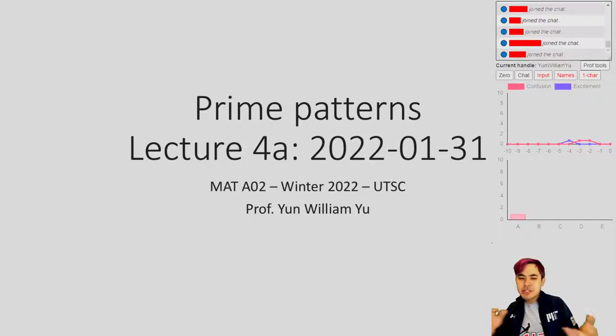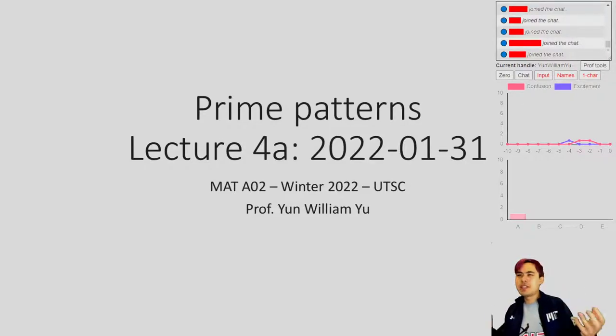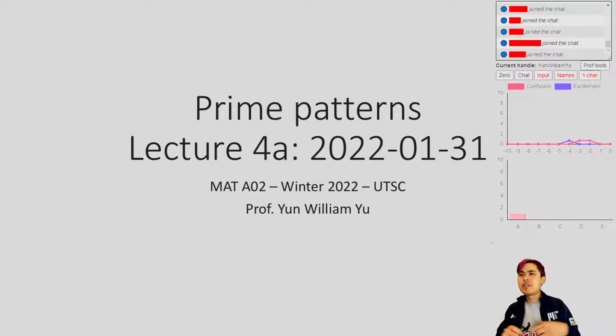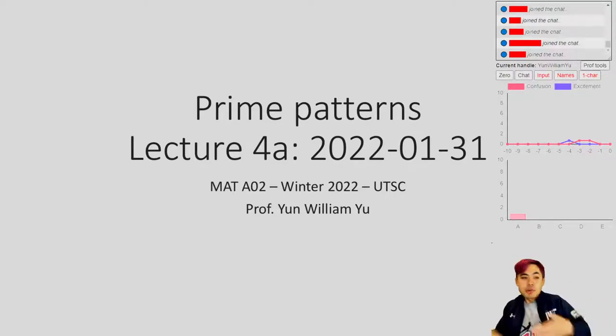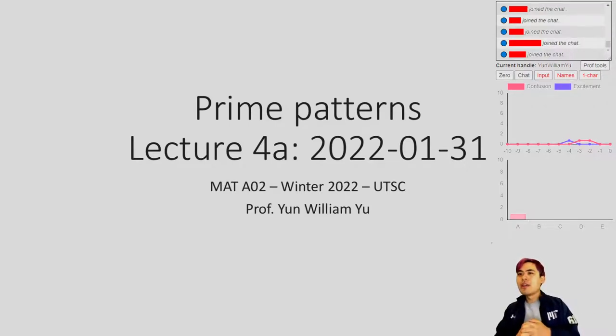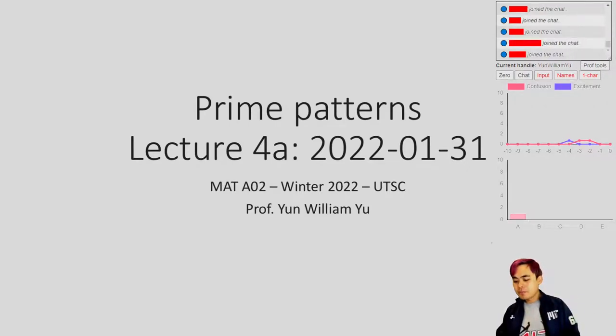Last time we also talked a little bit about the difference between invention and discovery in mathematics. And now that we've invented - or maybe discovered - the prime numbers, depending on your point of view, well, what else can we say about them?